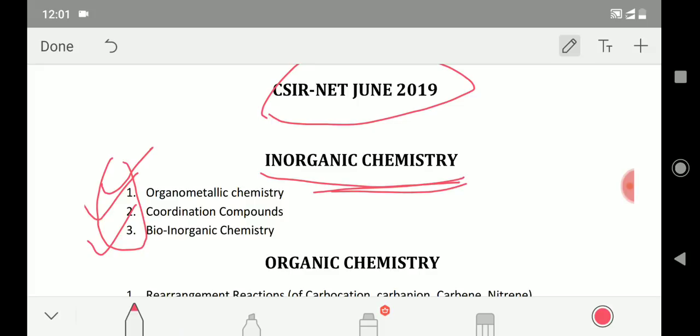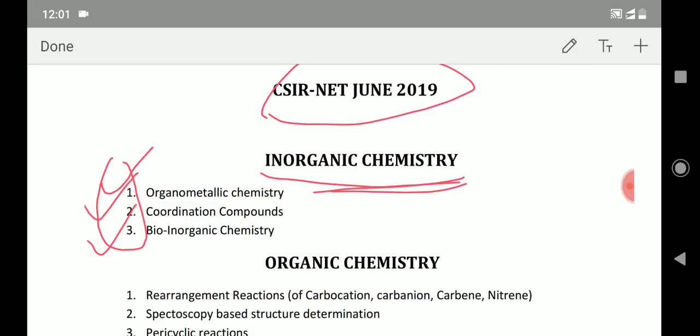Just revise whatever you read during this one year or six months. You don't need to pay attention to other topics like the periodic table. If questions come from there, you can do it easily, but you should focus more on organometallic chemistry, coordination compounds, and bioinorganic chemistry. That will give you good marks in the CSIR NET exam.